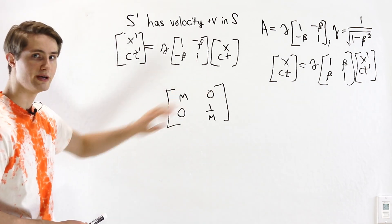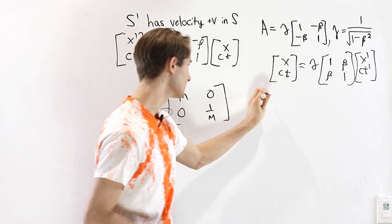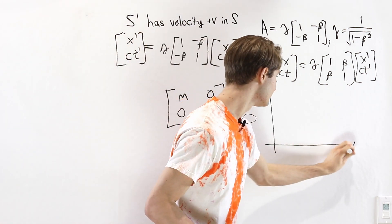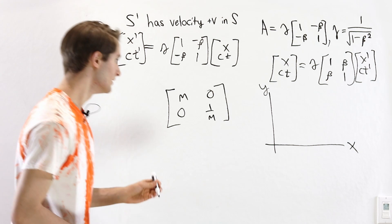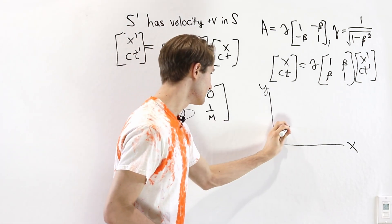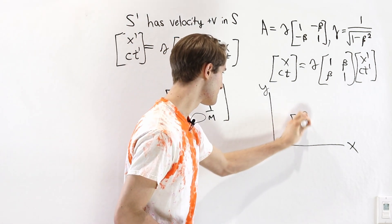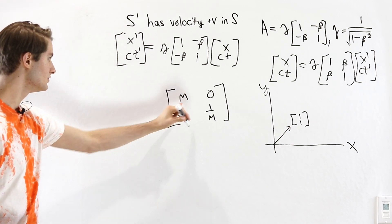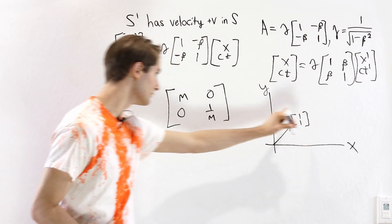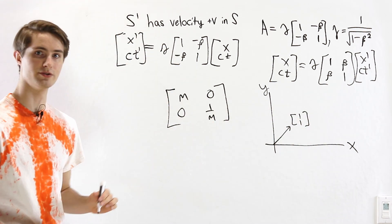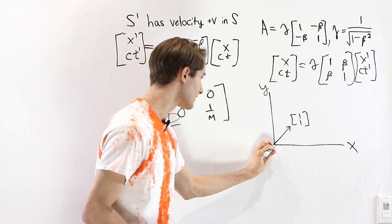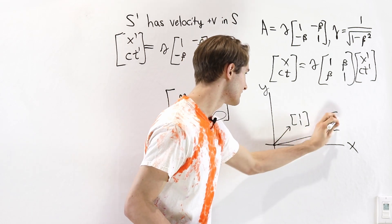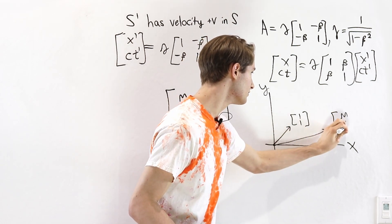Now if we think about what the transformation for this diagonal matrix looks like, we're going to have a plot like this, and suppose we have the vector 1, 1 here. After we apply the matrix, all we have to do is multiply 1 by M, and then multiply the second one by 1 over M. So our new vector is going to look like this, and it's going to have coordinates M, 1 over M.